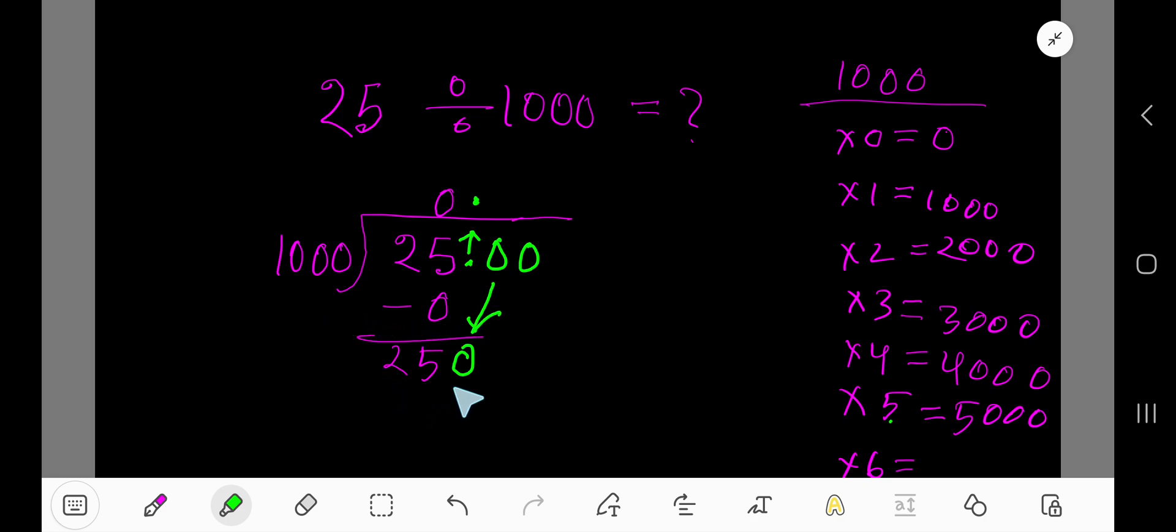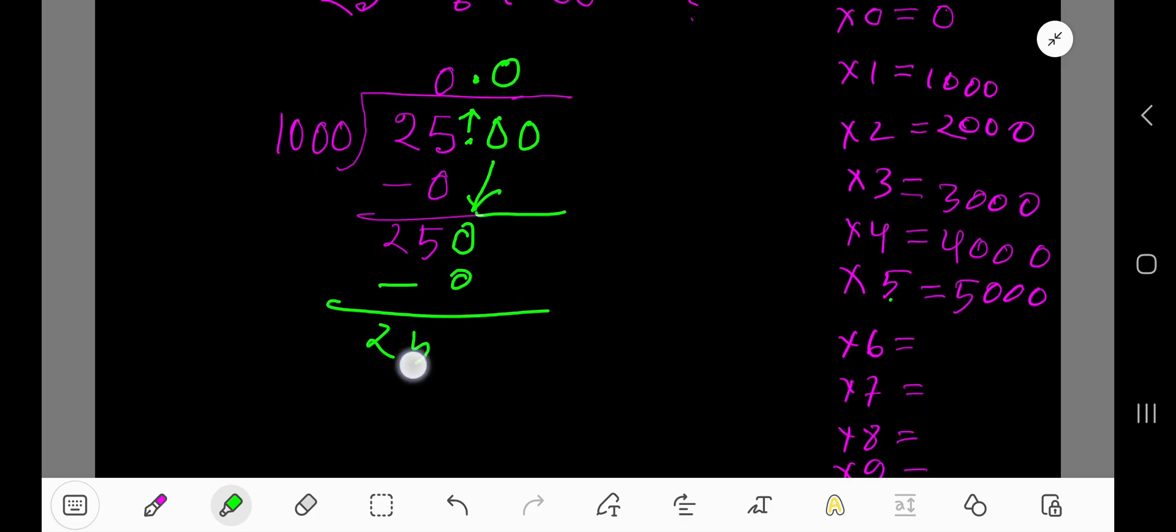1000 goes into 250 how many times? 0 times, as 250 is less than 1000. 0 times 1000 which is 0. If you subtract, then you are getting 250.